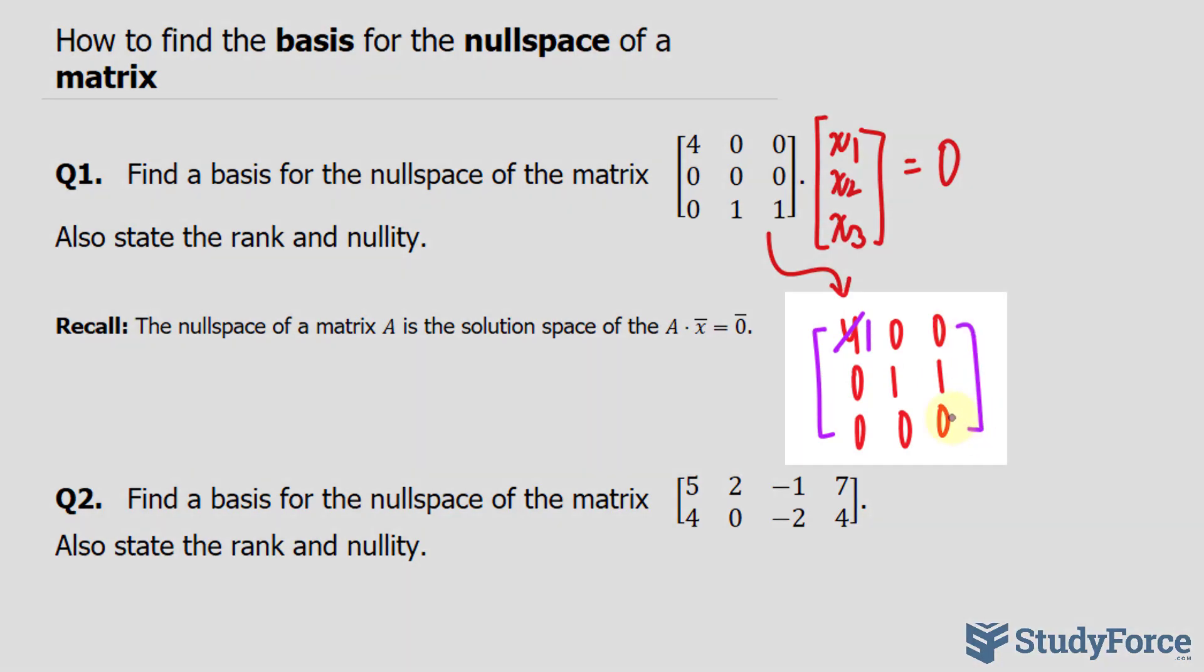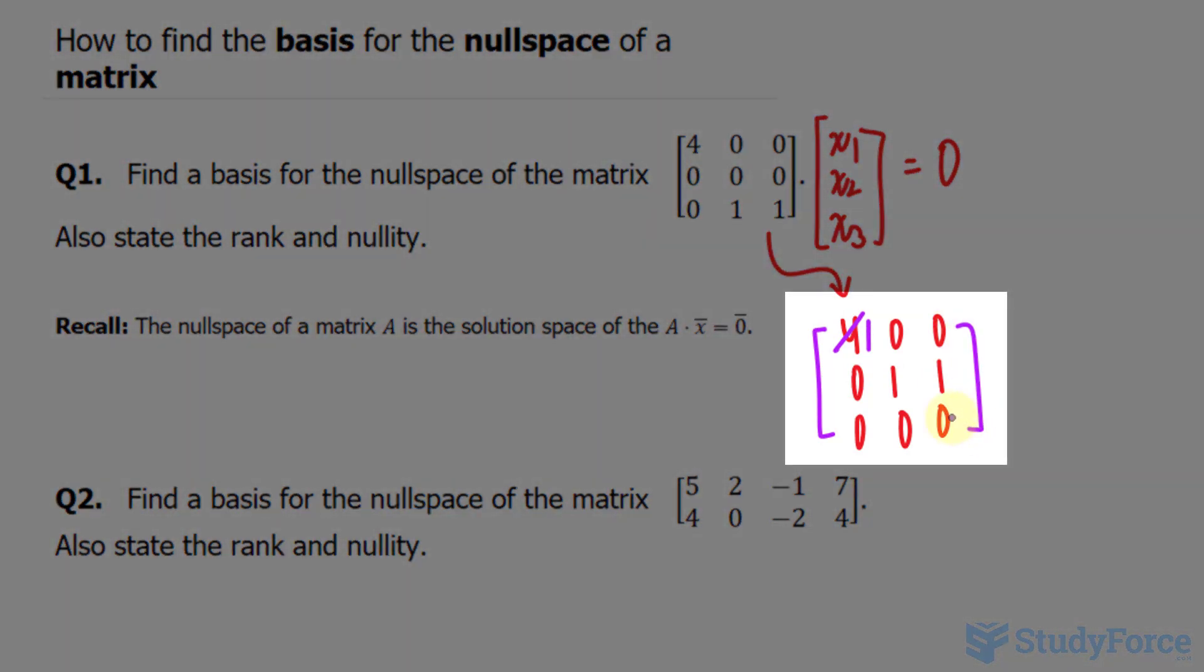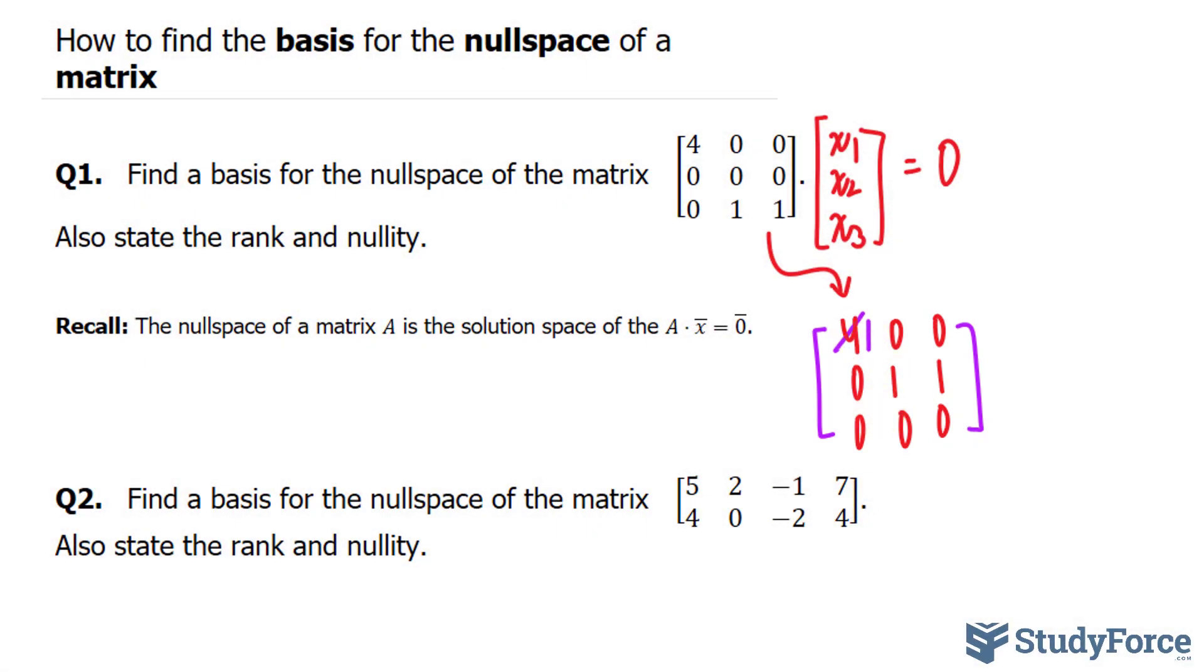So here we have our matrix in row echelon form. Notice the leading ones along the main diagonal. Now if we convert this matrix back into equation form, we'll have one equation that looks like this where, remember this column represents x sub two and this column represents x sub three. This equation will look like this, x sub two plus x sub three is equal to zero.